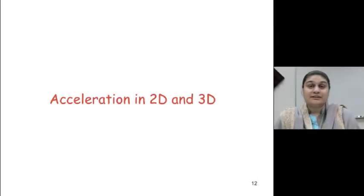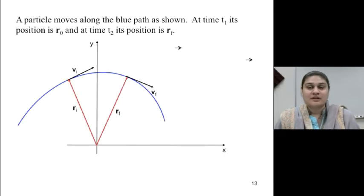So now let's talk about how acceleration varies as a function of when we go from one dimension to three dimensions. Taking the same particle as we had before, it is moving along the blue path as shown, and at time t0 its position is ri, and at time t2 its position is at rf.